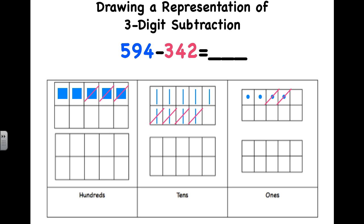What I have left over will be the difference or the answer to my subtraction problem. So, left over, I have two ones, five tens, and two hundreds. So, this means the difference of the equation 594 take away 342 is 256.